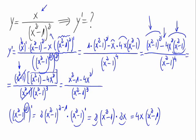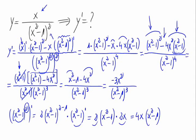So we would have x squared minus 1 minus 4x squared divided by x squared minus 1 cubed. The denominator stays the same and the numerator simplifies to x² - 4x² = -3x² - 1. This would be the result of the derivative.